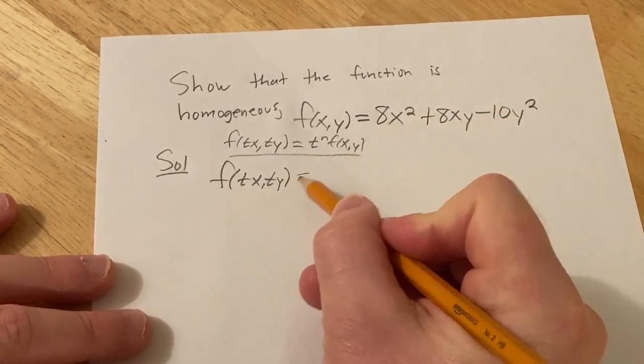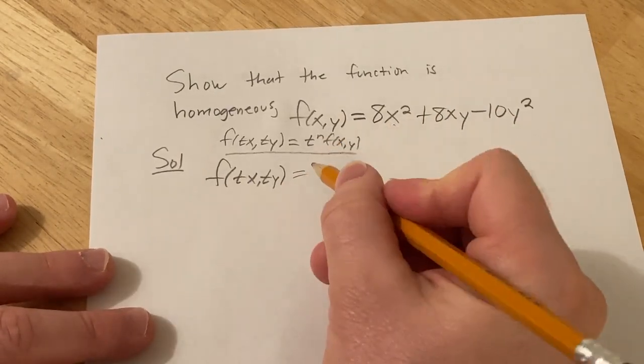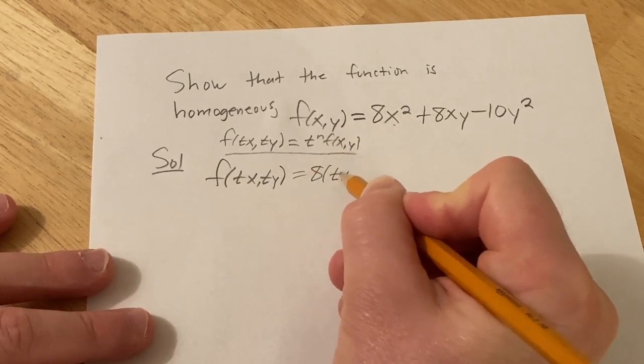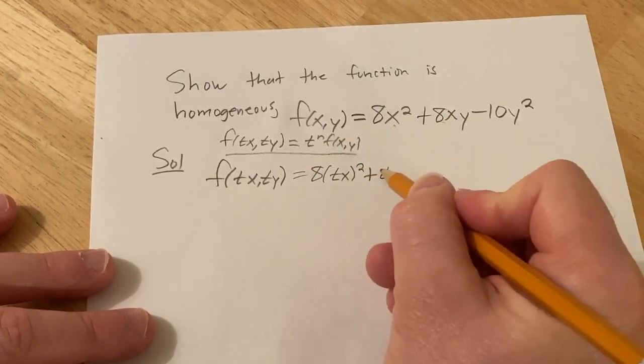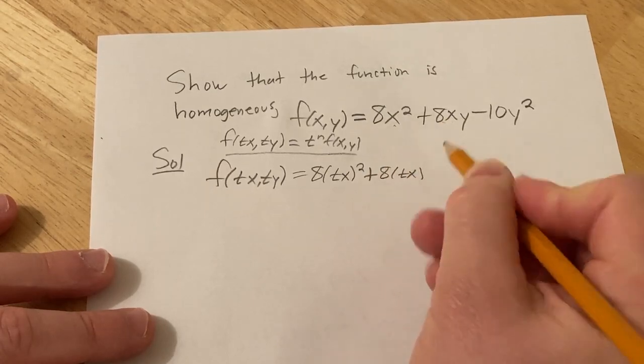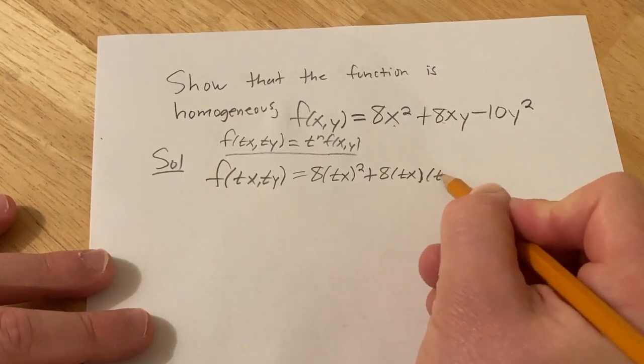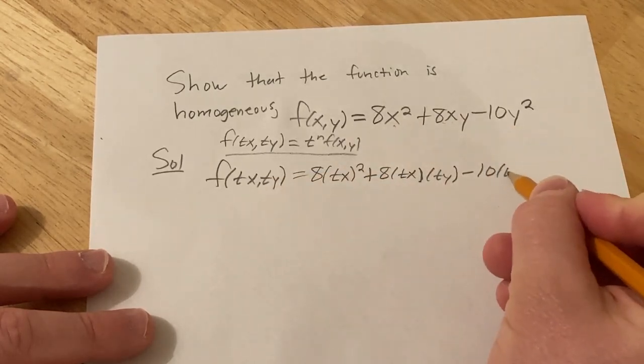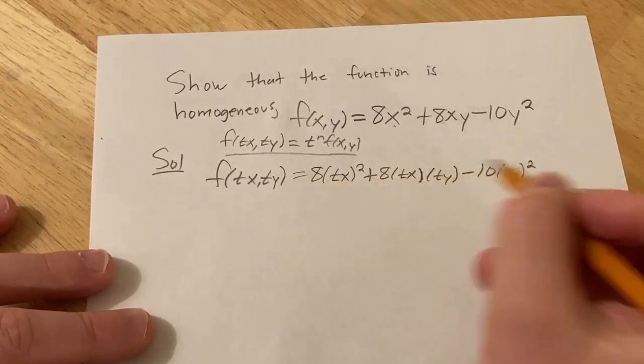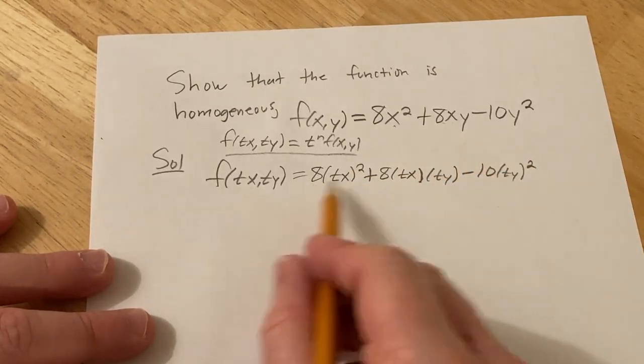Alright, so here instead of x squared we're going to have tx. So this is 8 tx squared plus 8 tx and then y is ty minus 10 and then y again is ty. So we're here. So now we can keep going.